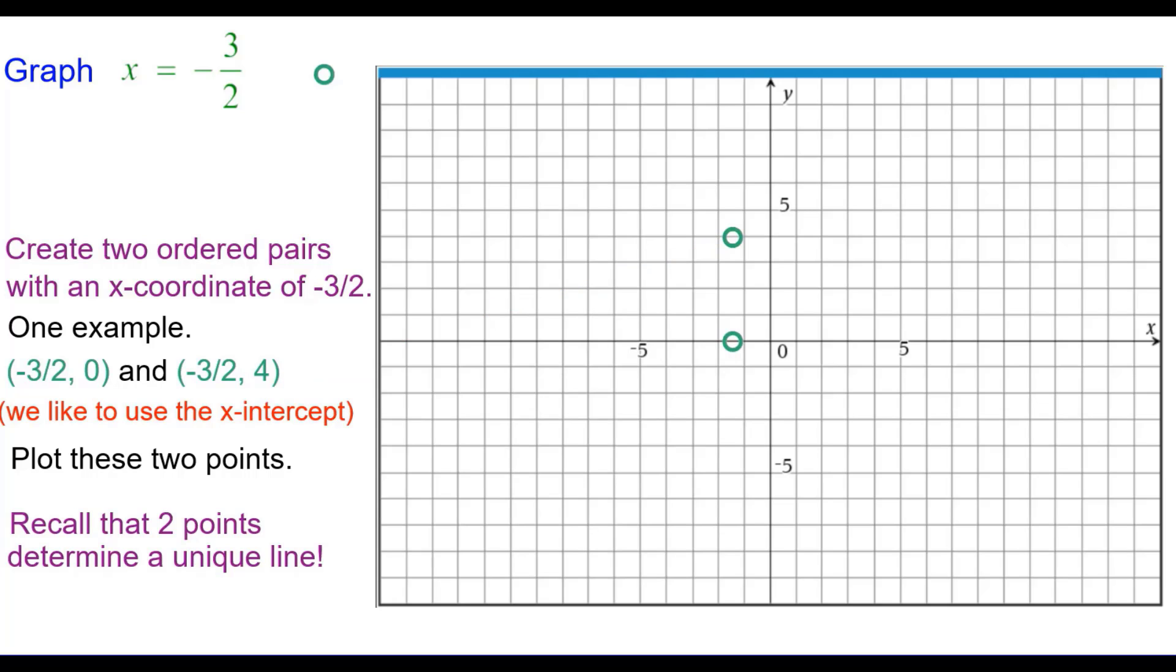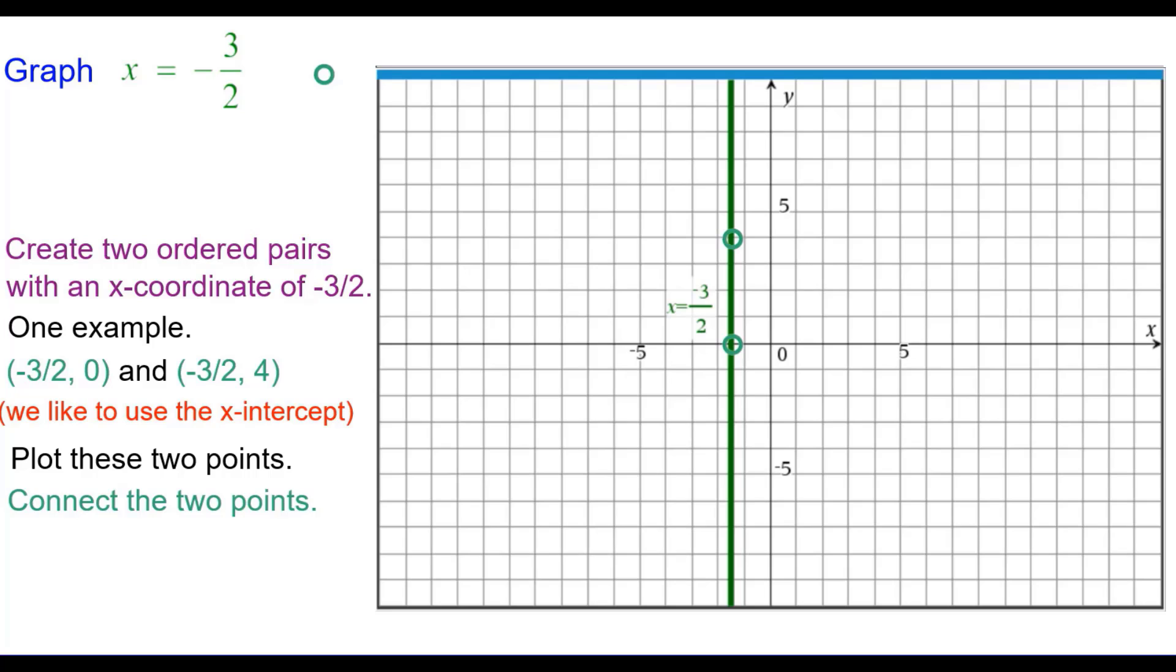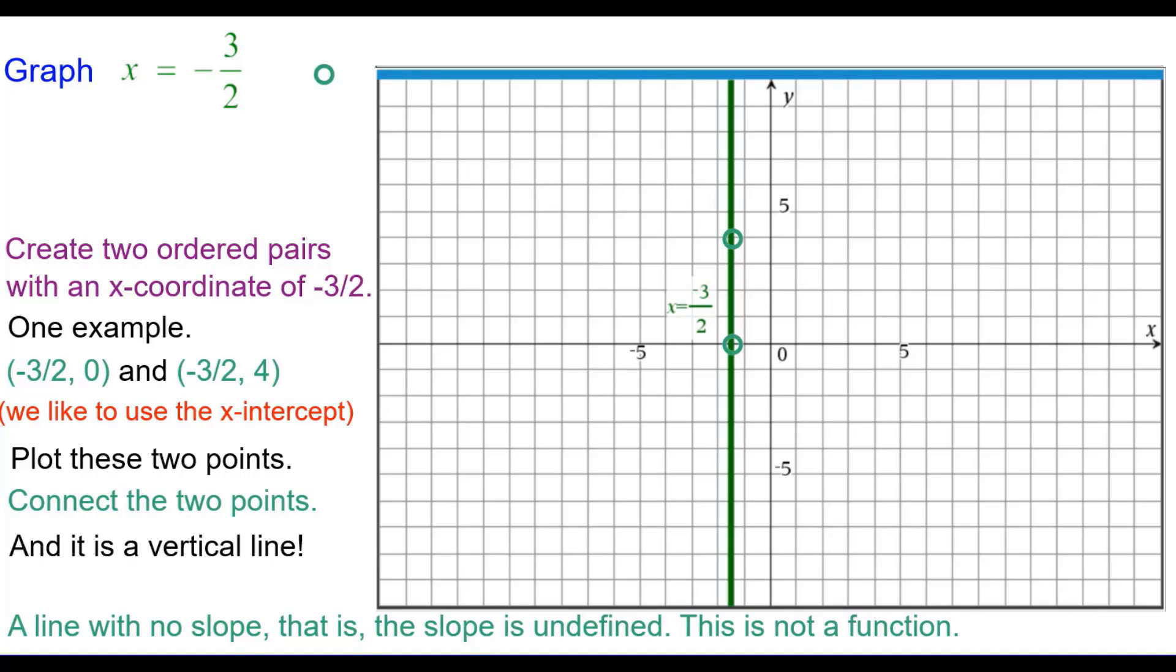Recall that two points determine a unique line. The graph of x equals constant is a line. Connecting those points and it is a vertical line. It has no slope or the slope is undefined and it's not a function.